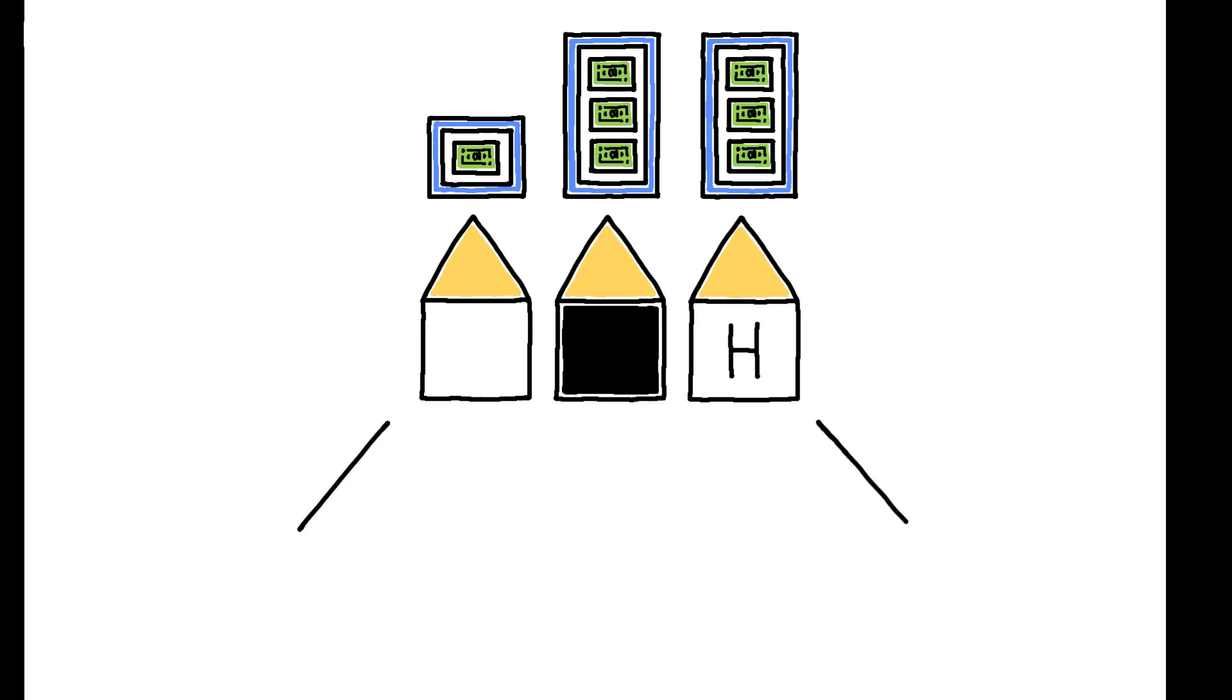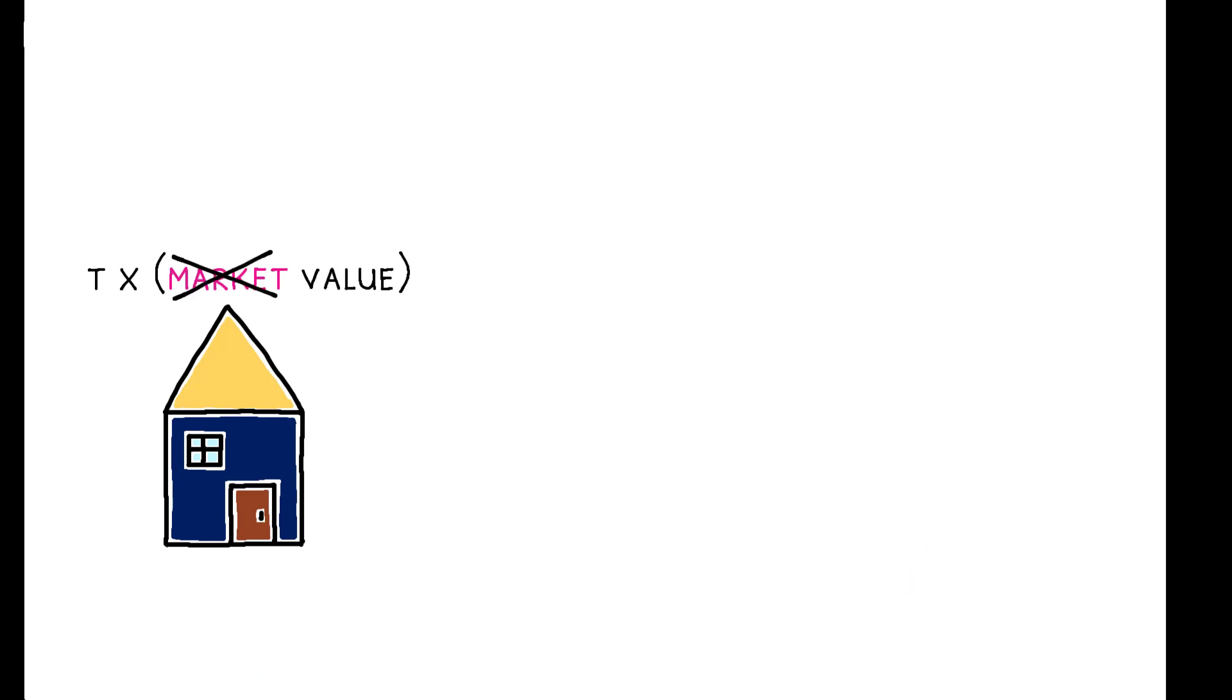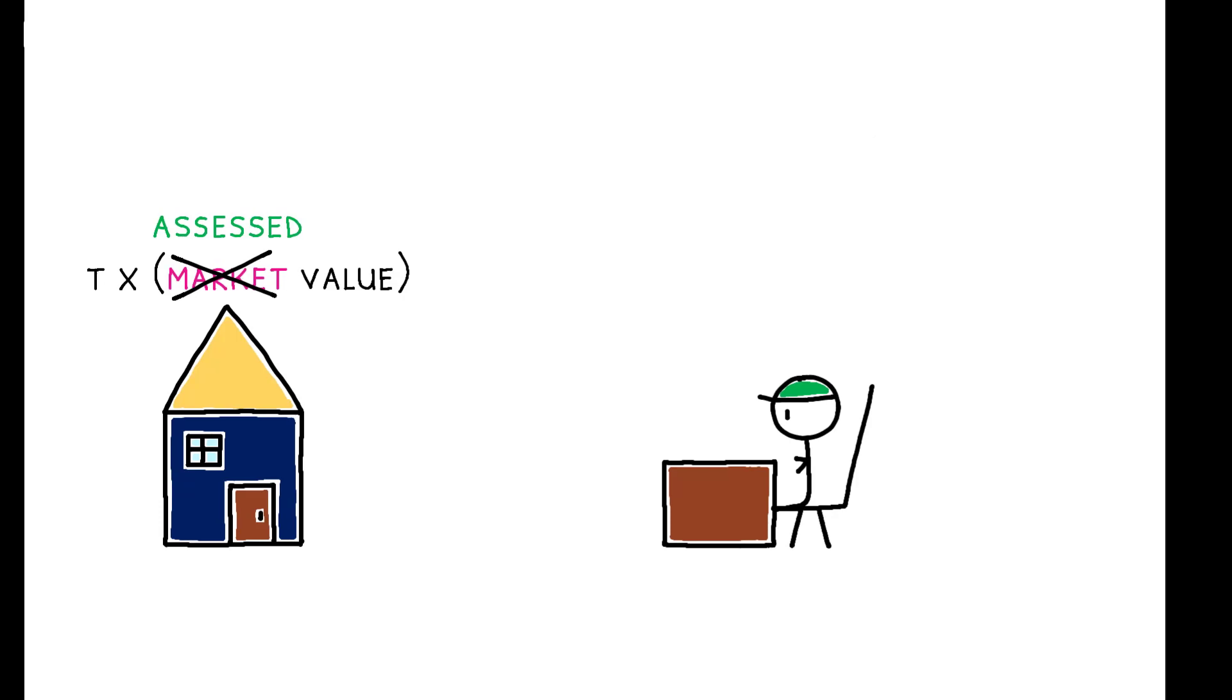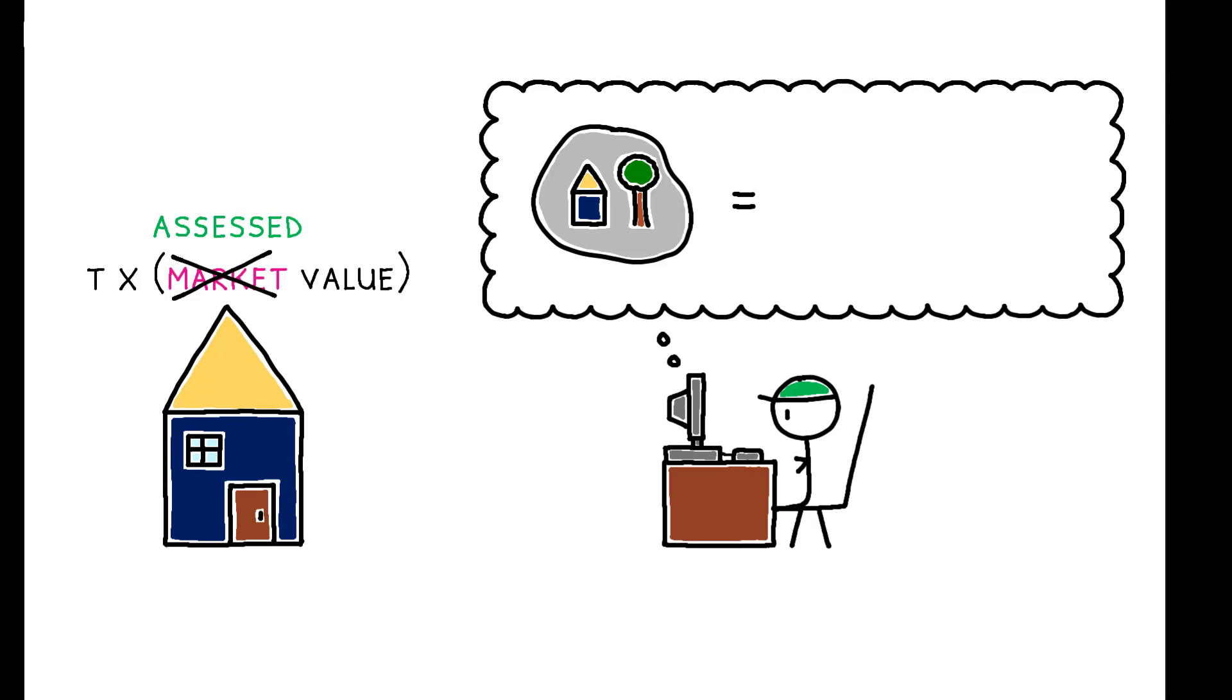Rather, the paper points to two channels that give rise to racial assessment gaps. The first relates to spatial factors. Recall that a property's tax bill is based on its assessed value, which is a local official's projection of market price. These assessments are typically generated at the county level, and often use automated models that value properties as a function of their home and neighborhood characteristics.